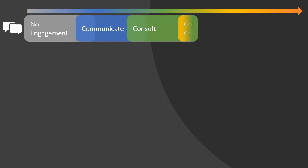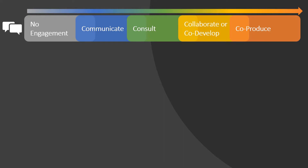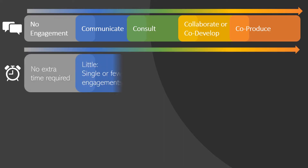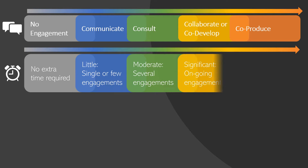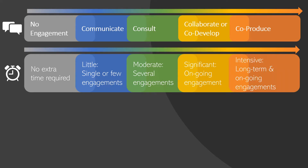Stakeholder engagement covers a continuum of possible interactions with stakeholders. If the box farthest to the left represents no engagement, moving to the right on the spectrum represents more interactive and regular engagement with stakeholders. Moving to the right also requires more time and planning for stakeholder engagement.